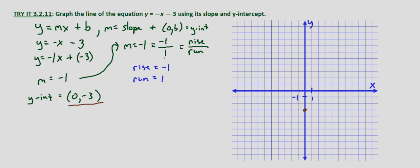Now our rise is negative 1 and our run is 1. So we go down 1 and over 1. And just so we can make sure, let's go down 1 and over 1 from that, and down 1 and over 1 from that. And we can also go backwards going up 1 and left 1.